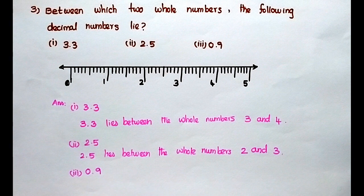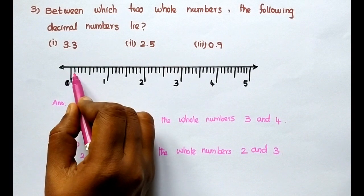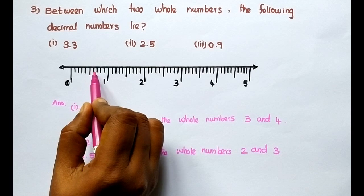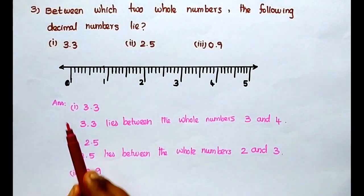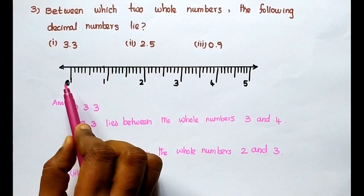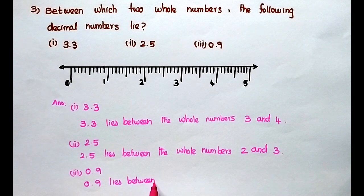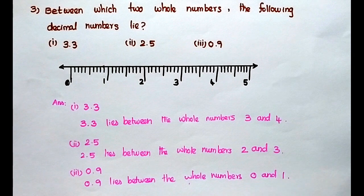Next: 0.9. Counting from 0: 0.1, 0.2, 0.3, 0.4, 0.5, 0.6, 0.7, 0.8, 0.9 — the number lies here. Between which two whole numbers? That is 0 and 1. So 0.9 lies between the whole numbers 0 and 1. That is the answer.